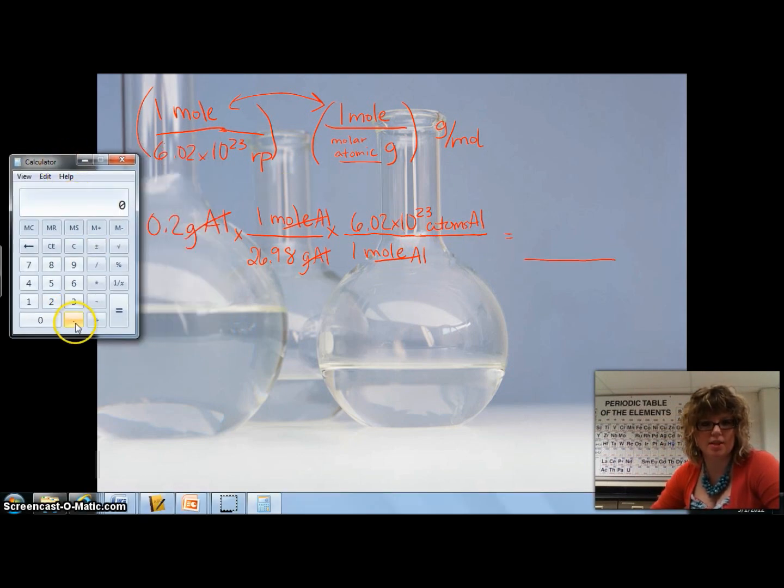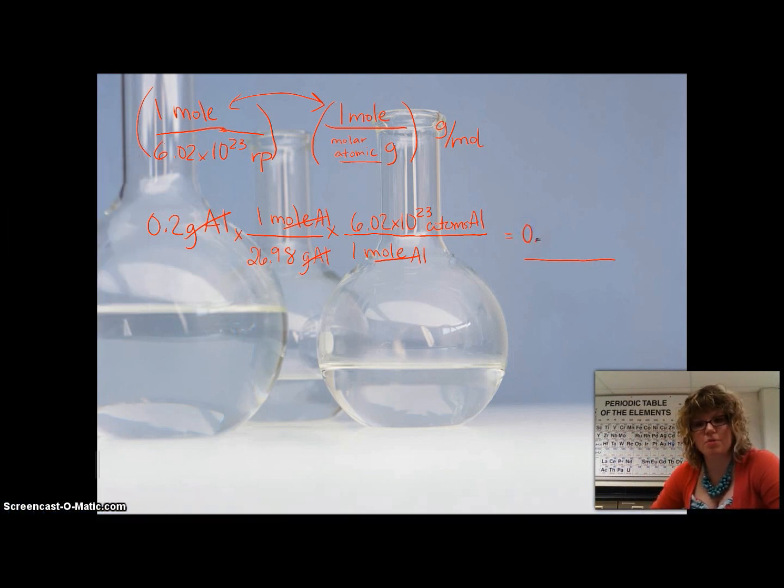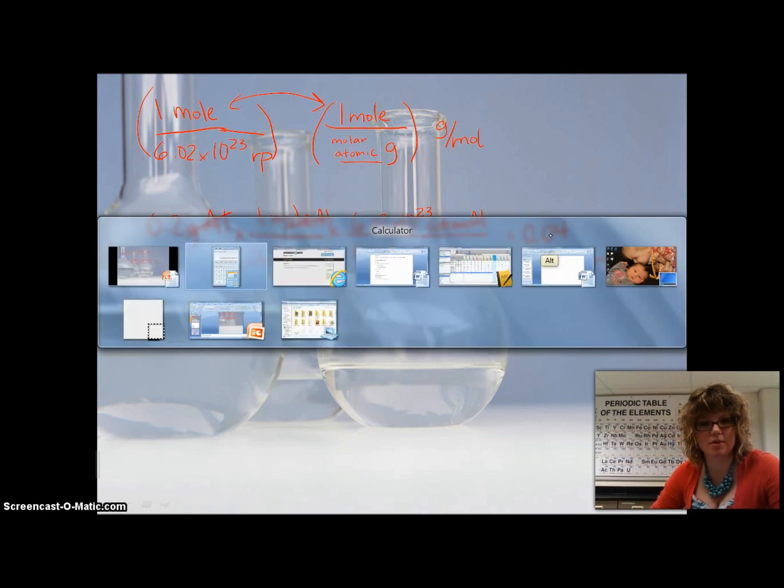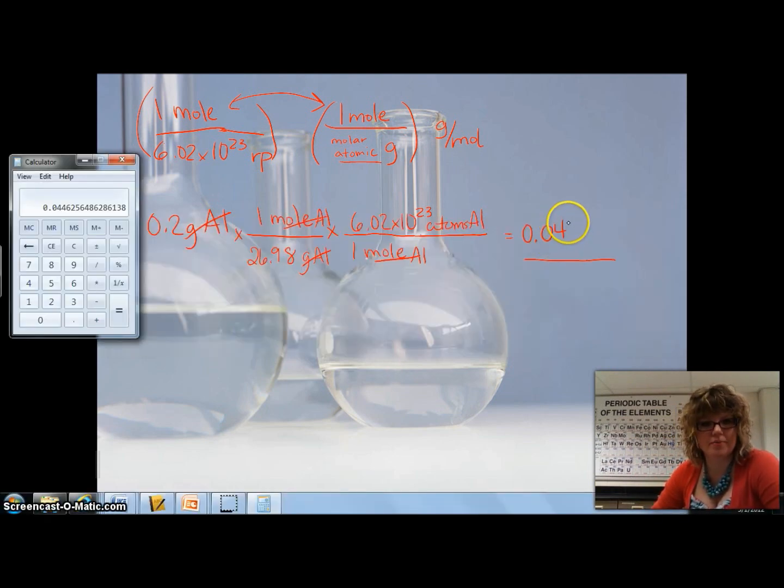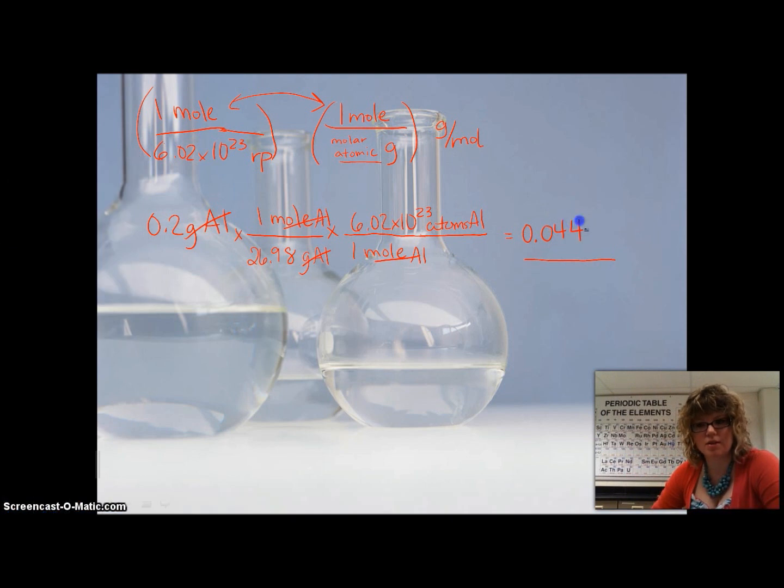Let's punch this into the calculator. So we have 0.2 divided by 26.98, and I always equal it in between just because I like to. And then now, since that's on top, we're going to multiply. So now we're going to times it by 6.02. And now remember, we do not put the 10 to the 23rd into the calculator. We have 0.044625 atoms.